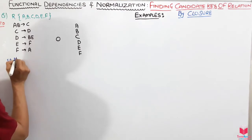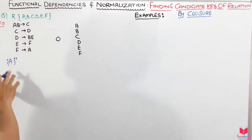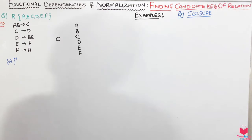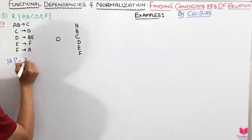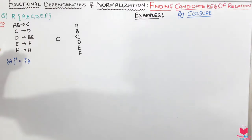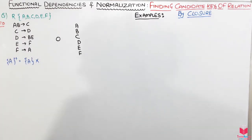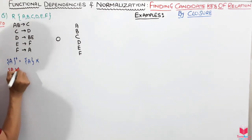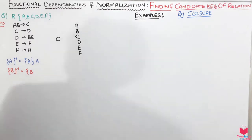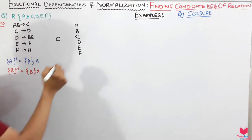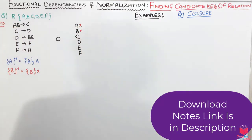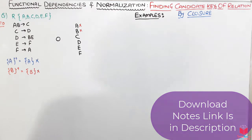Let's take single attributes one by one. Closure of A: A+ gives at least {A}. From A, I can't deduce anything else, so A is not a candidate key. Closure of B: B+ gives at least {B}. From B, I cannot find anything else, so B is also rejected.